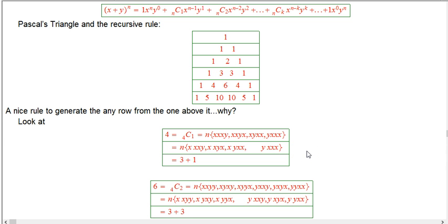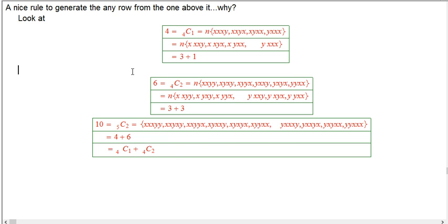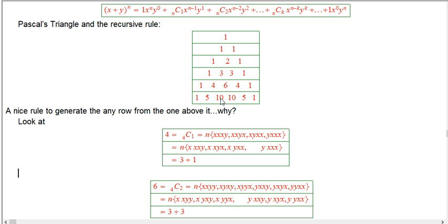So this is one way why, how this counting procedure can also be used to show this fundamental rule of Pascal that any entry is the sum of the entries above and to the left and above and to the right. It's just based on this counting of words and partitioning, splitting it up into two pieces based on whether the first letter is an x or the first letter is a y. Often you'll see this proved with sort of fancy things with factorials and identities with factorials, and I think this is a better way.